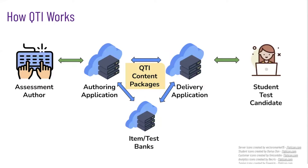Now let's look at how QTI 3 works. This diagram shows the QTI exchange process. The assessment author creates the assessment items and tests — this could be a separate author at an institution or an author that's part of an authoring application. They may not necessarily know that they are using QTI, but the data is often stored in the QTI format and exported to the other applications in the QTI format. Next, you can see the authoring application, where the items and tests can either be authored in that application or ingested by it. These can be high-stakes summative assessments or formative tests. The assessment items and tests will be formatted in the QTI format in the authoring application and then exported and exchanged to the delivery application, which can import, ingest, and present that QTI content to the test candidate, which is our student.